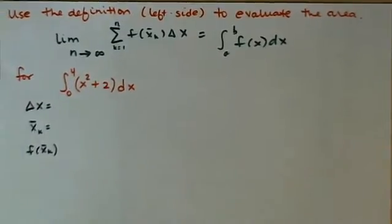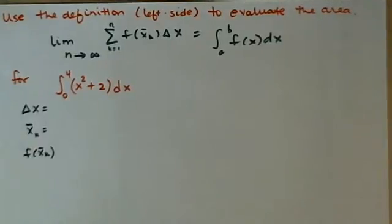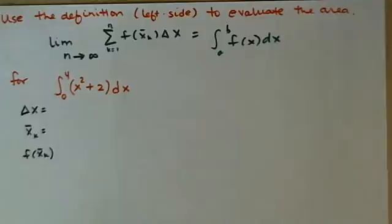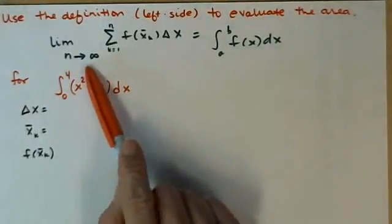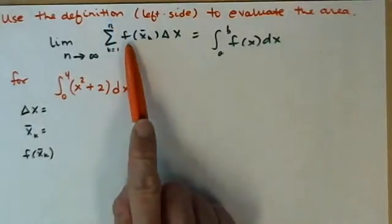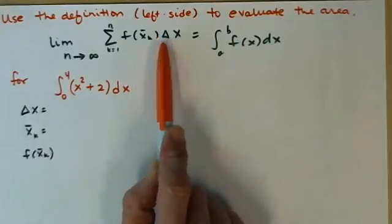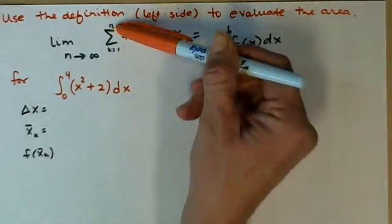I want to make sure that everybody is able to use the definition where we take the limit of the Riemann sum to calculate the area under a curve. So we are going to use the left side, the limit as n goes to infinity of our Riemann sum as k goes from 1 to n, f of x sub k bar times delta x, height of my rectangles times the width of my rectangles as my number of rectangles goes to infinity.